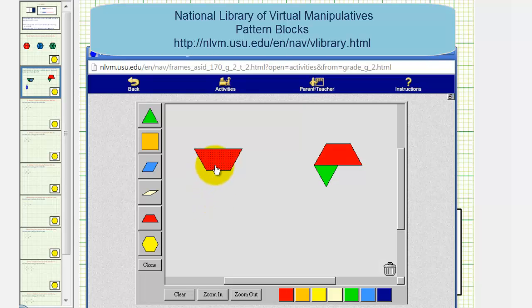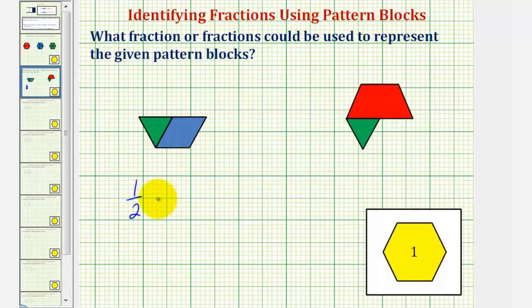We could also cut or denominate this red piece into three equal partitions, which would give us three green pattern blocks: one, two, and three. Notice in this form, we could say the pattern blocks represent the fraction three sixths. This also tells us that one half equals three sixths, which means these are called equivalent fractions.